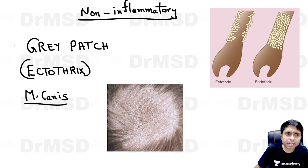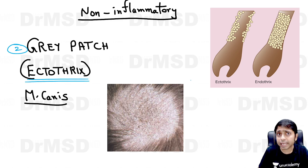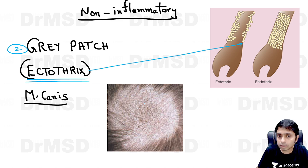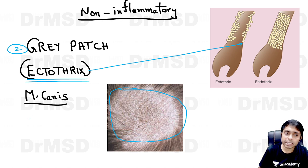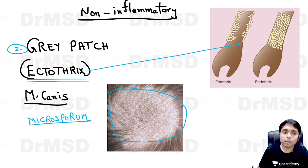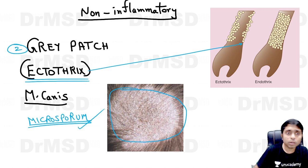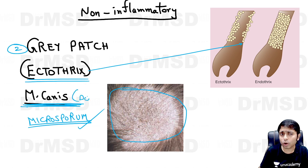In the second non-inflammatory variety — the gray patch variety — the spores and hyphae are seen attached on the surface of the hair follicle. On the scalp where hair loss is present, you see a light grayish hue. This is called the gray patch variety of Tinea capitis, and the causative agent is Microsporum canis. 'Canis' for dog, as you may know.